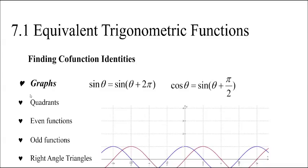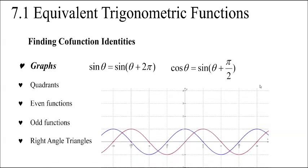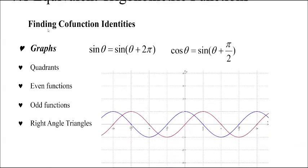Hello and welcome to Ms. Ma's Advanced Functions class. This is 7.1, Equivalent Trigonometric Functions. We did explore these in class, but I just want to make sure everyone understands them. There are a lot of different ways to find co-function identities. The first way we can use is to look at the graphs.